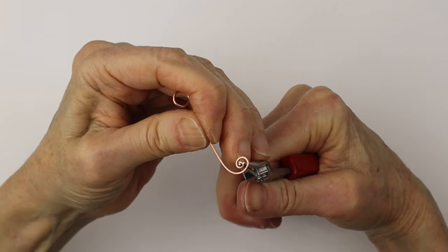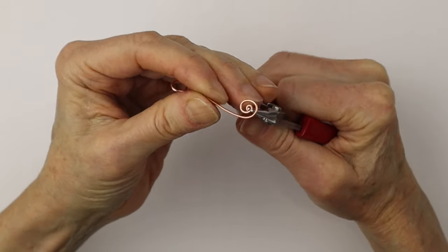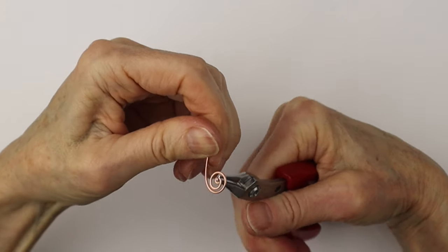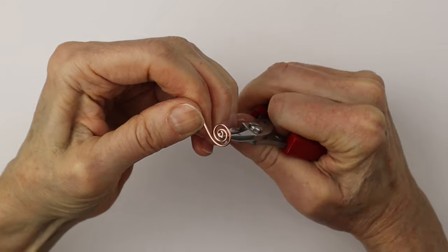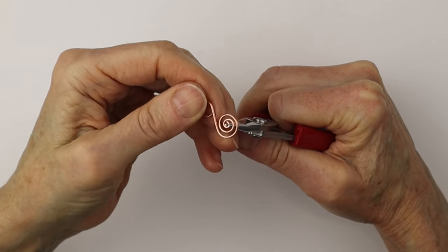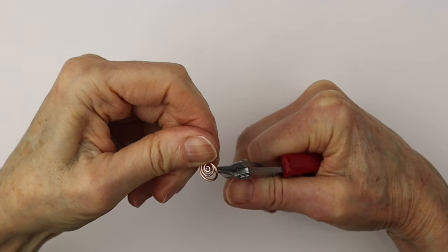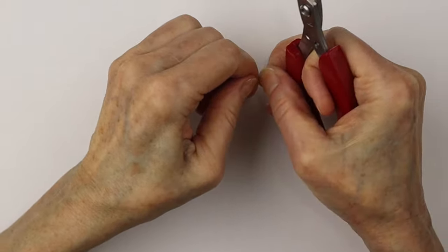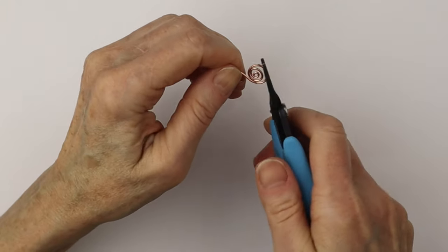This copper wire is quite smooth and soft. This is bare copper from Artistic Wire. We're just going to bring it in, bring it around to form that spiral. Just work it in there and keep pushing it. You can finish that with your thumb and your finger, press it down.